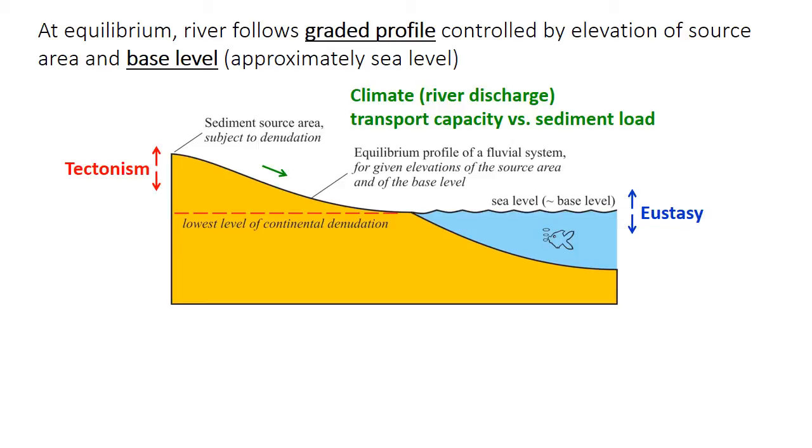Likewise, climate itself actually also influences the graded profile through its influence on river discharge and the balance between transport capacity and the sediment load. But for simplicity, at least for today, we'll just consider simple base level cycles caused by eustatic changes.